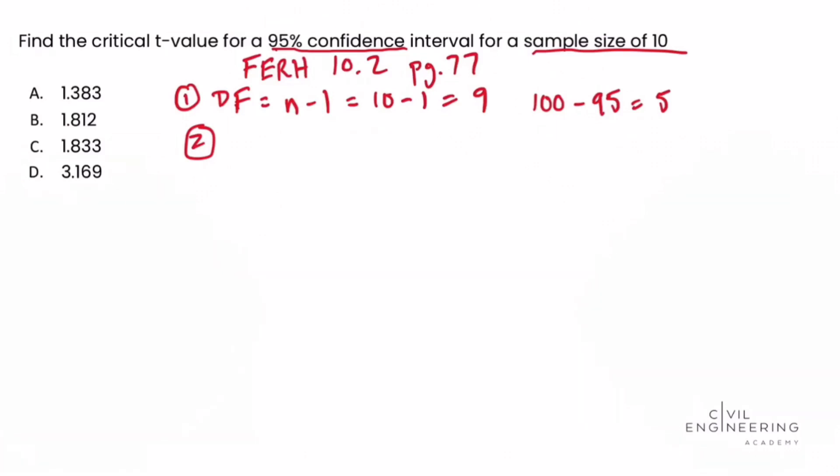5% is the same as 0.05. So back to the t-distribution table in the column of the degrees of freedom, got down to 9, and we're going to work our way across the row until we come across the column for 0.05 alpha value.